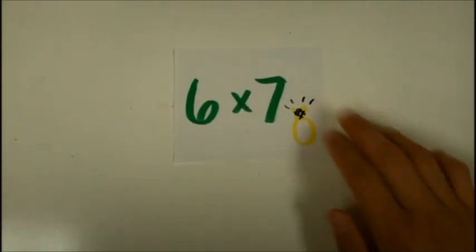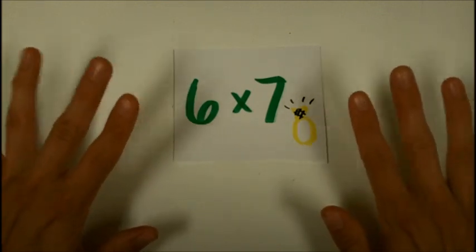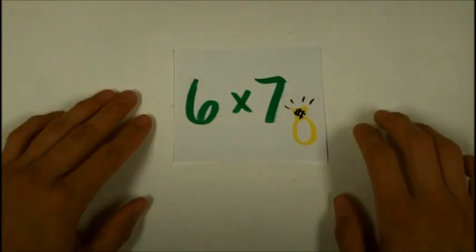Six times seven. Ready? Go. Six times seven. Rings are new. Shiny and bright. All 42.